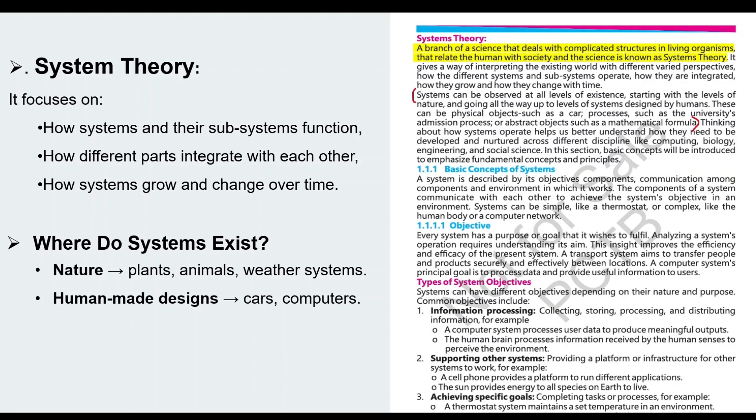Computer systems, network systems - we can observe in all these. Next, processes like university admission system we can also observe, and in some abstract things like mathematical formulas and models we can also observe.